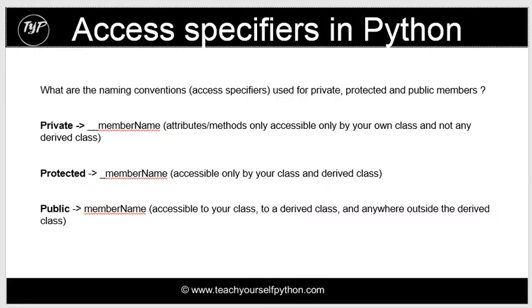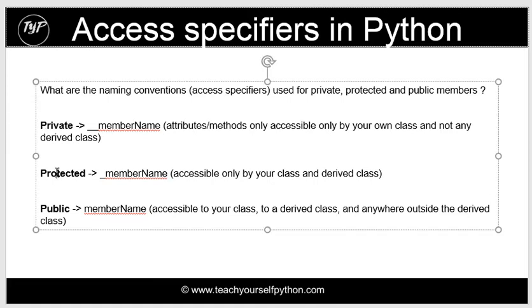Another very important concept is access specifiers. If you're encapsulating something and want to hide it, there are different levels of access. It's important to realize that Python doesn't have real private methods — it's just convention, so you can still access variables. The naming conventions are private, protected, and public, and we'll look at a real-world example to see how these can be done in Python.